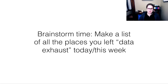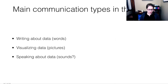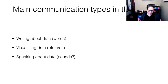I think data exhaust has kind of always been happening, but it's more prevalent now. So just take a couple of minutes and try to jot down some ideas about where you left data exhaust today or this week, and we'll talk about it when we're all together. We've thought about data, data types, and where data comes from. In this class, we're going to be talking about data communication, and we're going to talk about three main types: writing about data using words, visualizing data using pictures, and speaking about data.